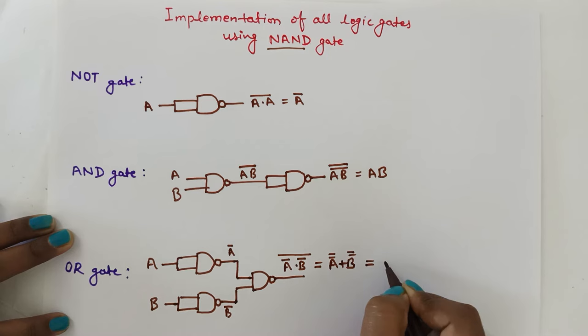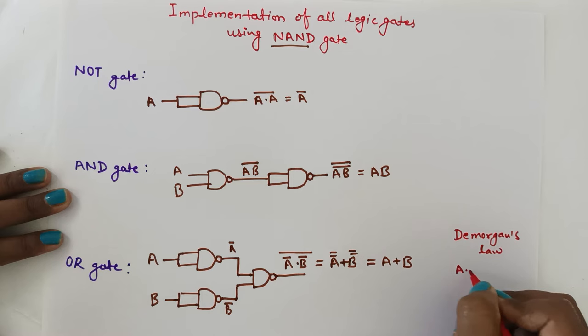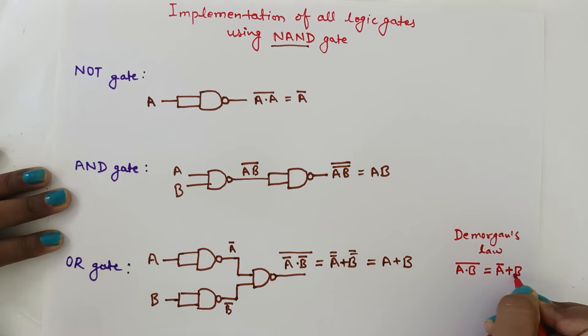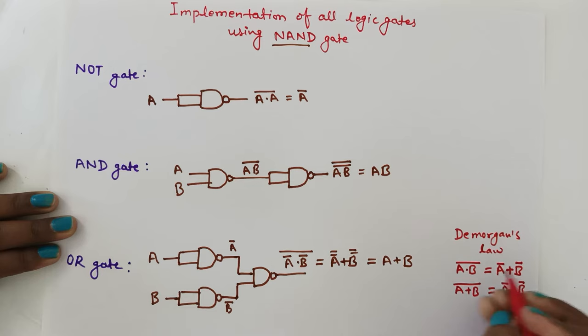Here we are using De Morgan's law. De Morgan's law states: if we have A dot B whole bar, we can write it as A bar plus B bar. And if we have A plus B whole bar, we can write it as A bar dot B bar. This is De Morgan's law.